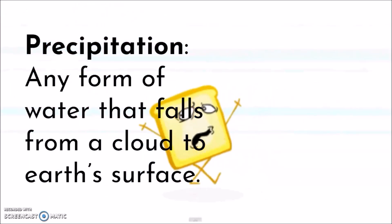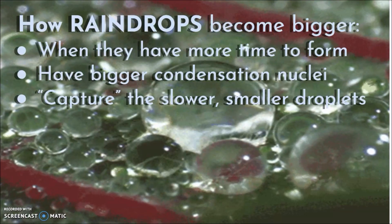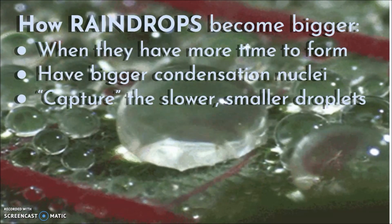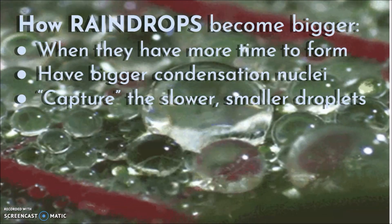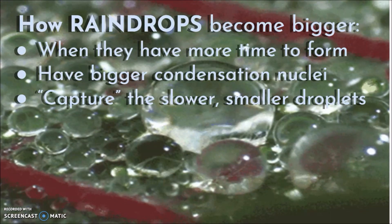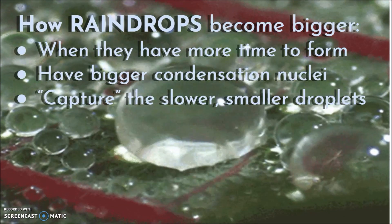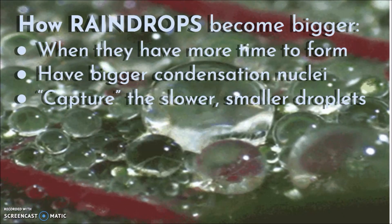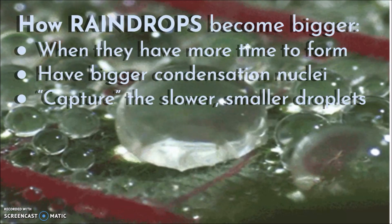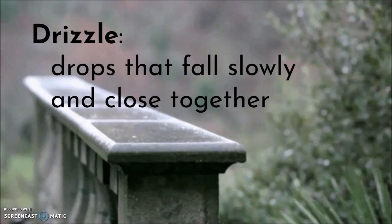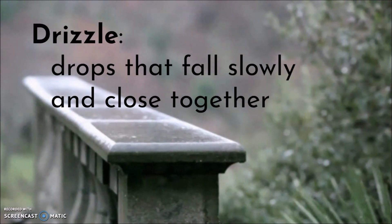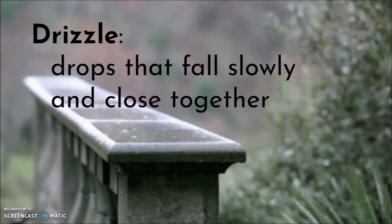So how do raindrops form? Well, droplets will bump into each other and combine. Some droplets will be bigger than others. Droplets become bigger if they formed earlier — giving them more time to grow — or if they have bigger condensation nuclei. Bigger drops fall faster than smaller drops and will capture and combine with them. Drizzle is fine water drops that fall slowly and close together. Raindrops are larger, fall faster, and are farther apart because they combine.